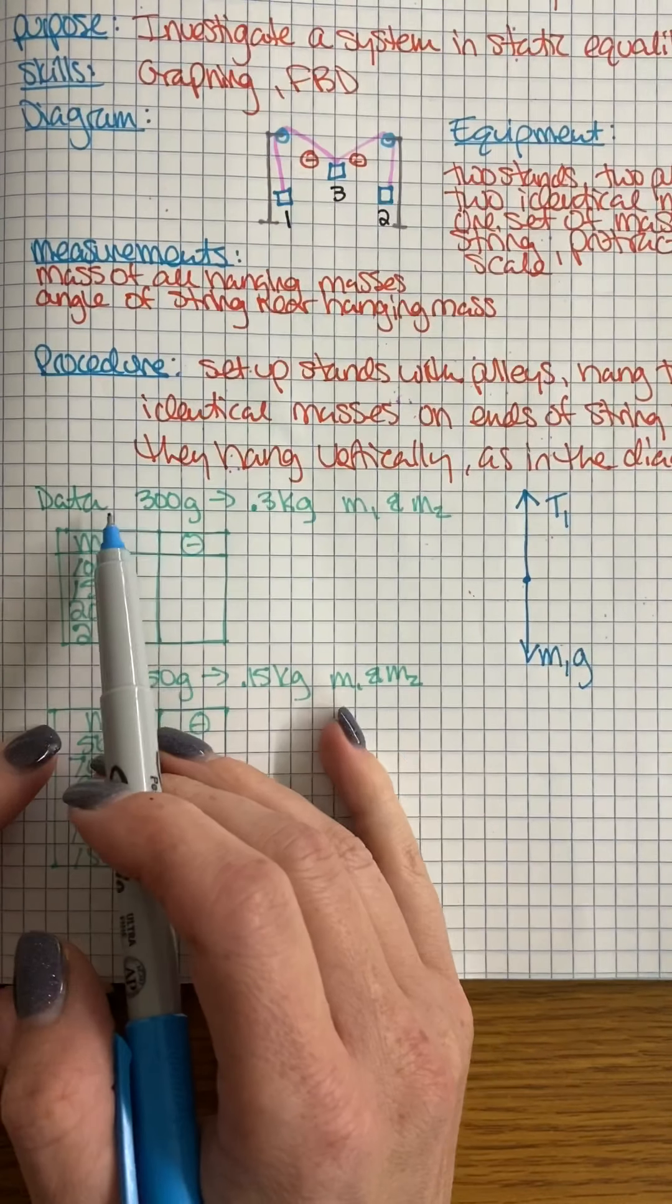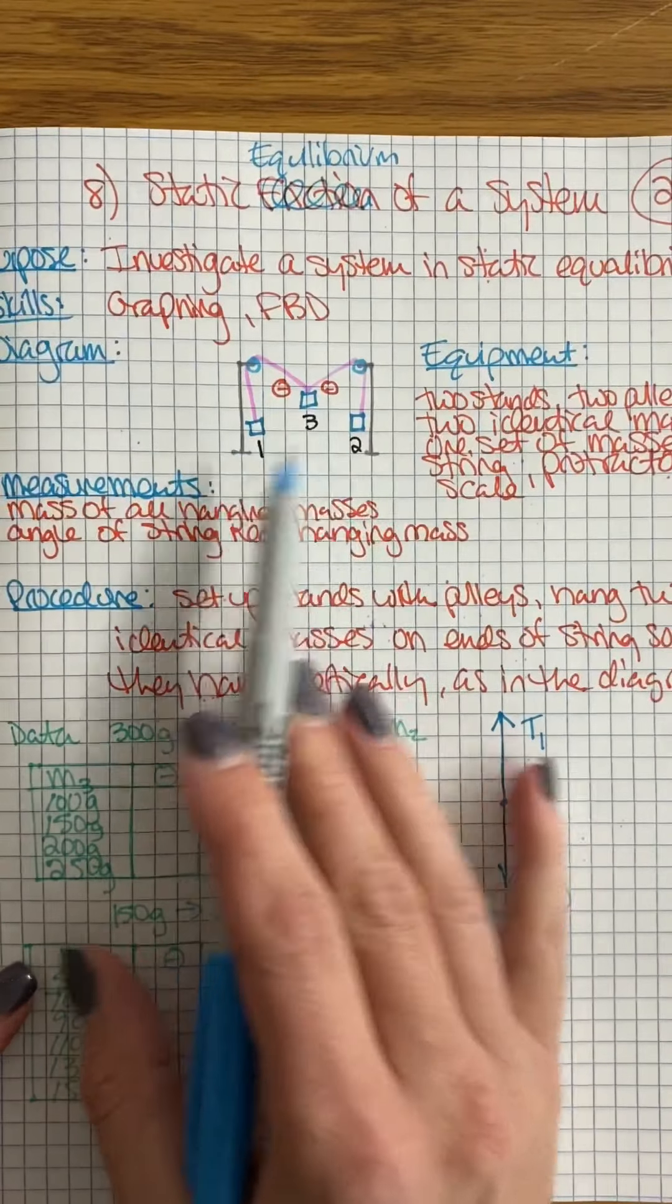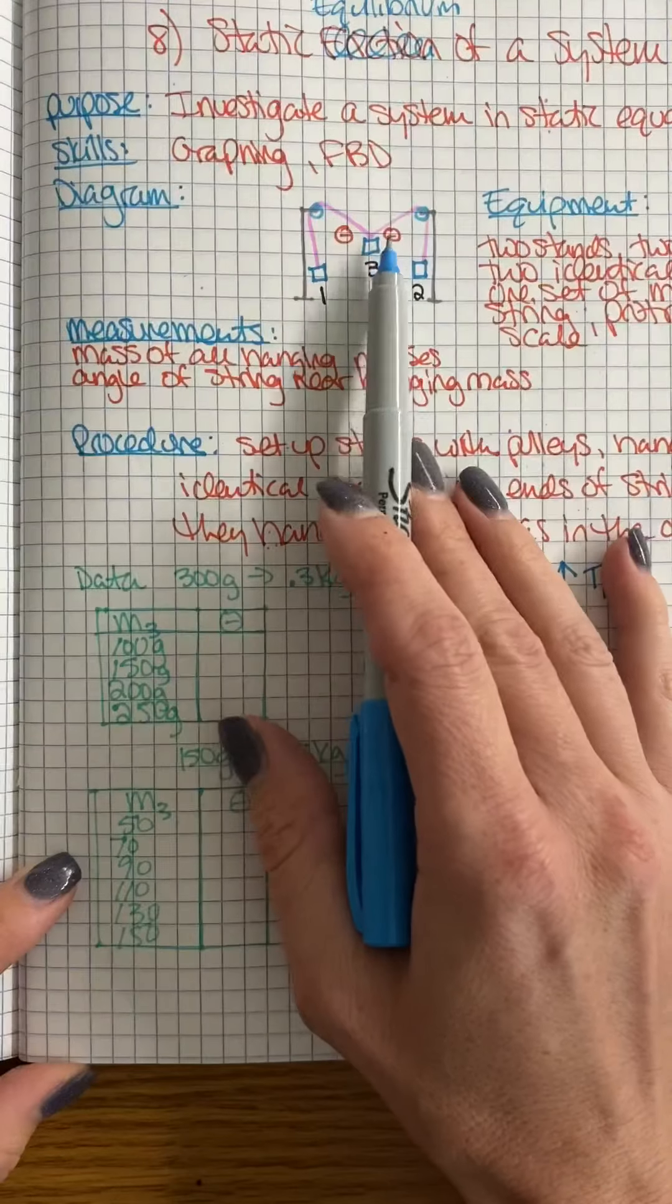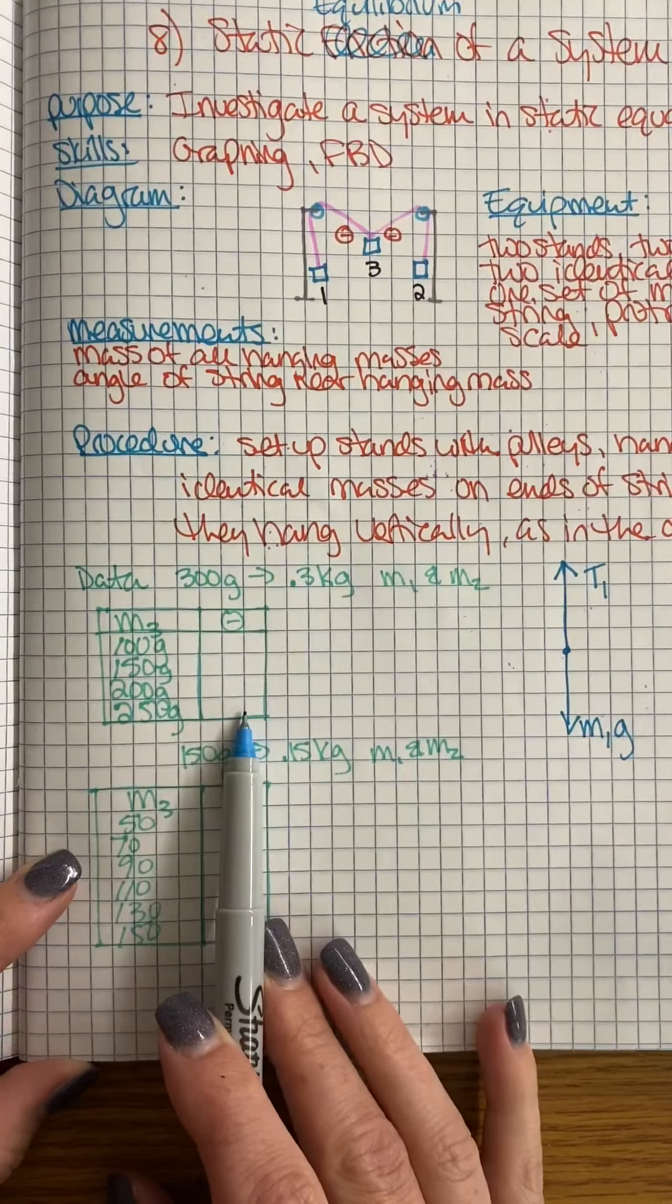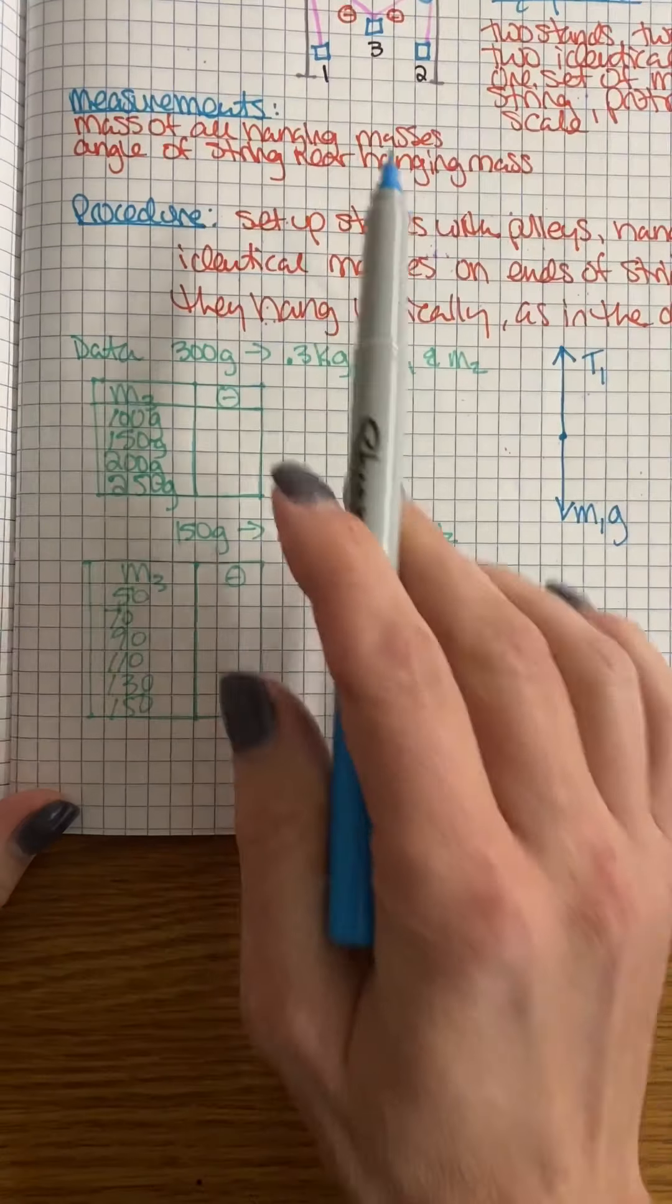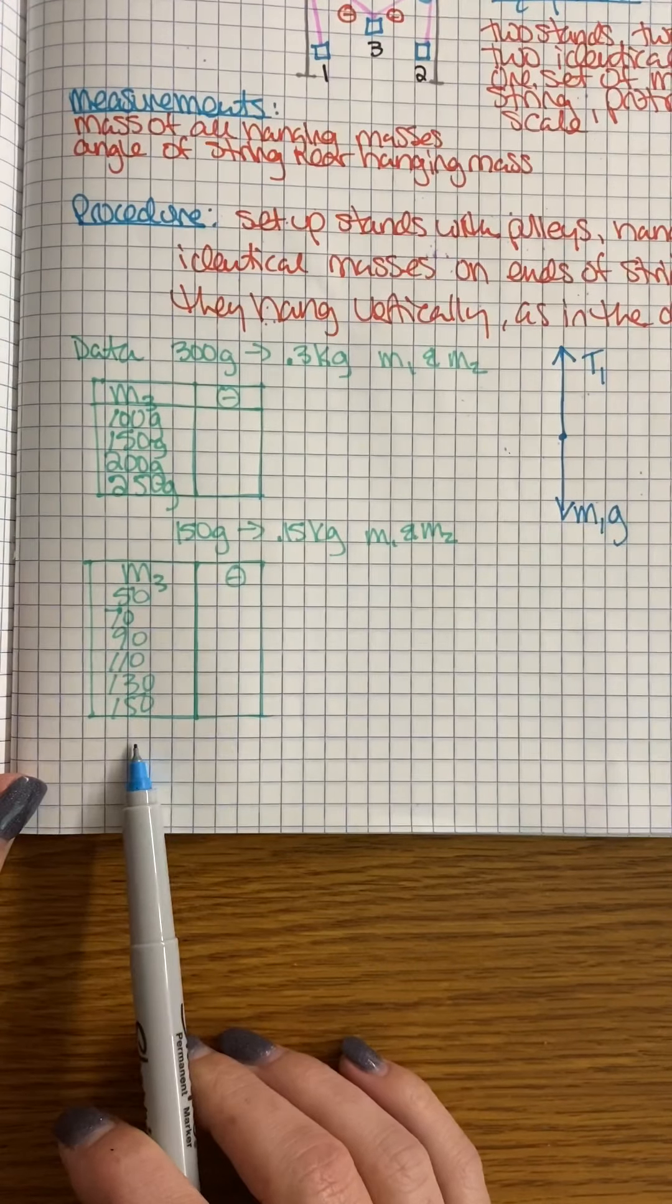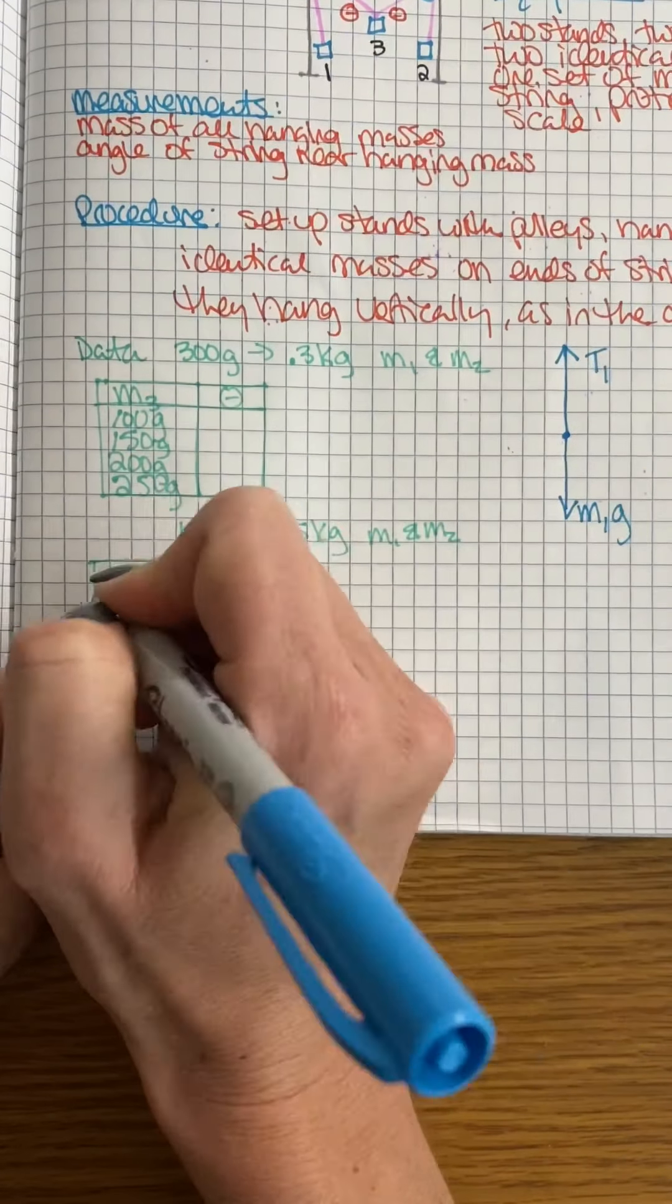We did two sets of data. We had our two masses up here as 300 grams, and then I put some hanging masses here and recorded the theta. The thetas are in the canvas page, so please check back there. I did a second set with 150 grams on each side and then some different masses in the middle. The thetas, again, are in your canvas page.